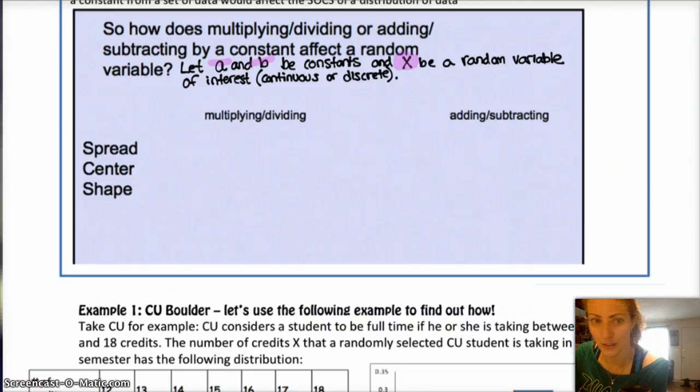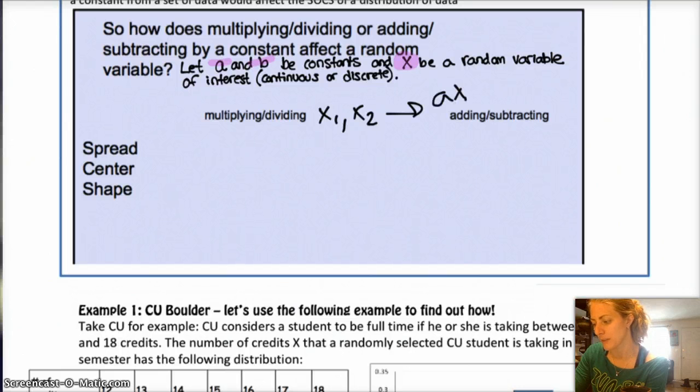So, we take every value, all of the little x's, x sub 1, x sub 2, and we're multiplying every single one of them by a. So, those turn into like a times x sub 1, and a times x sub 2, and so on. Right.